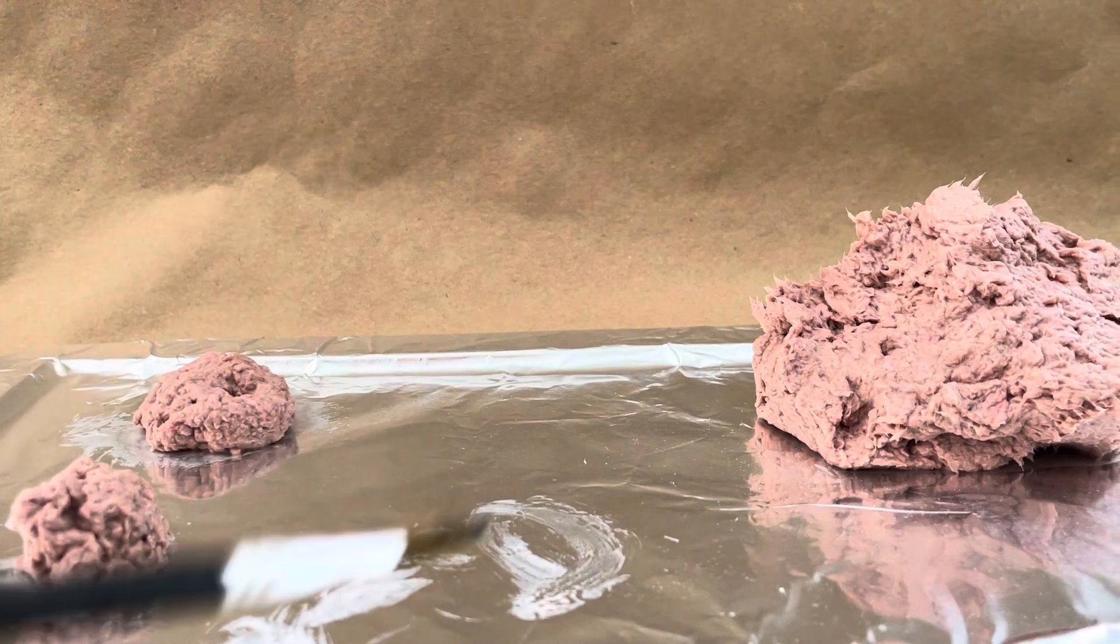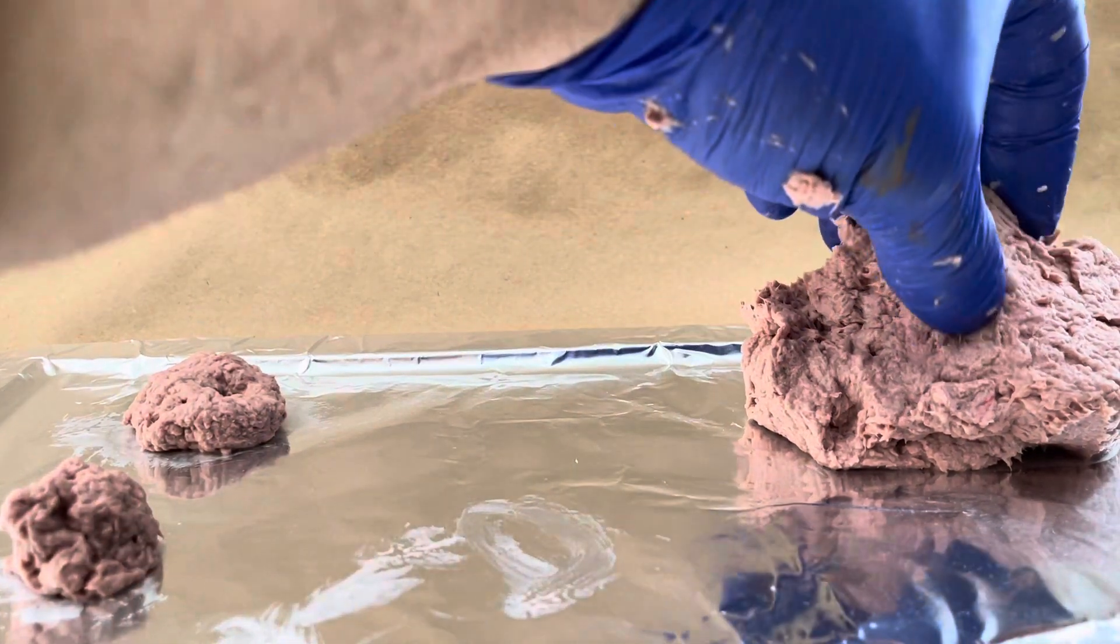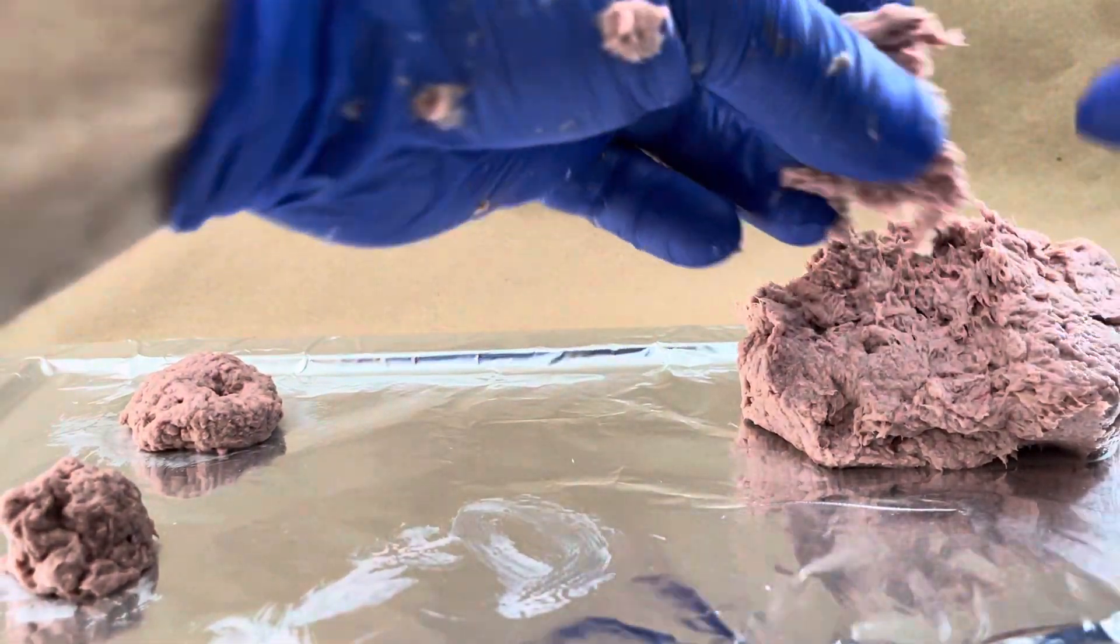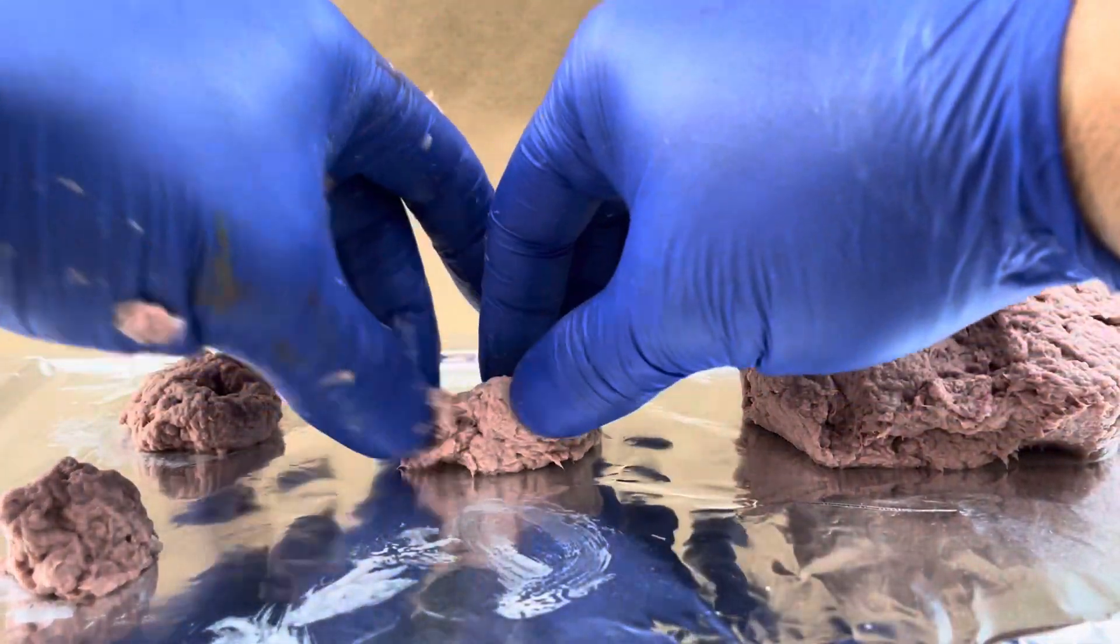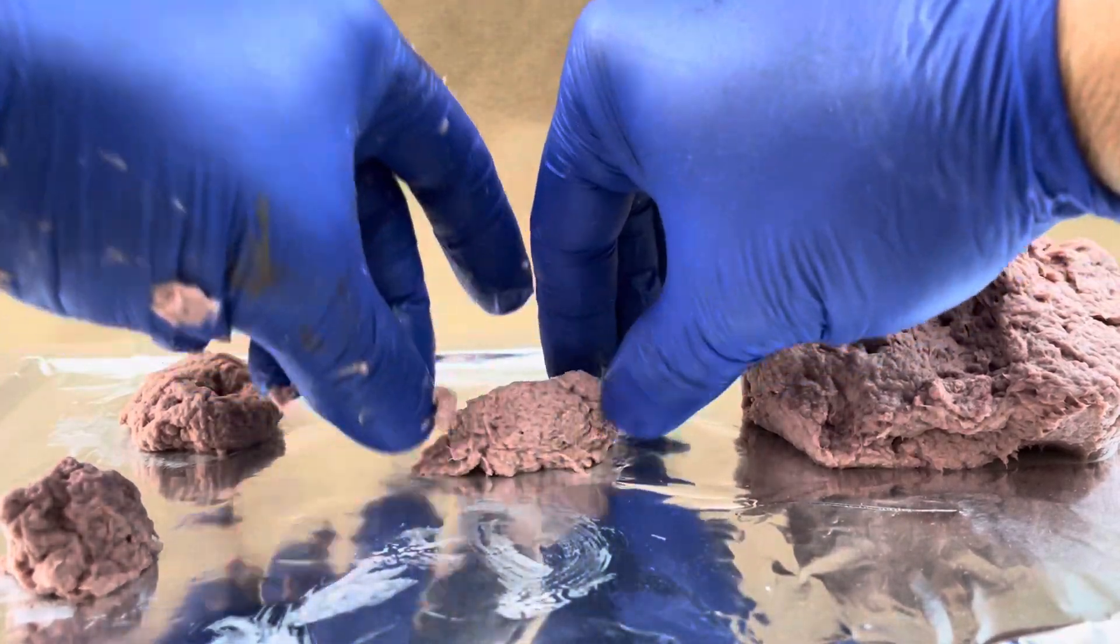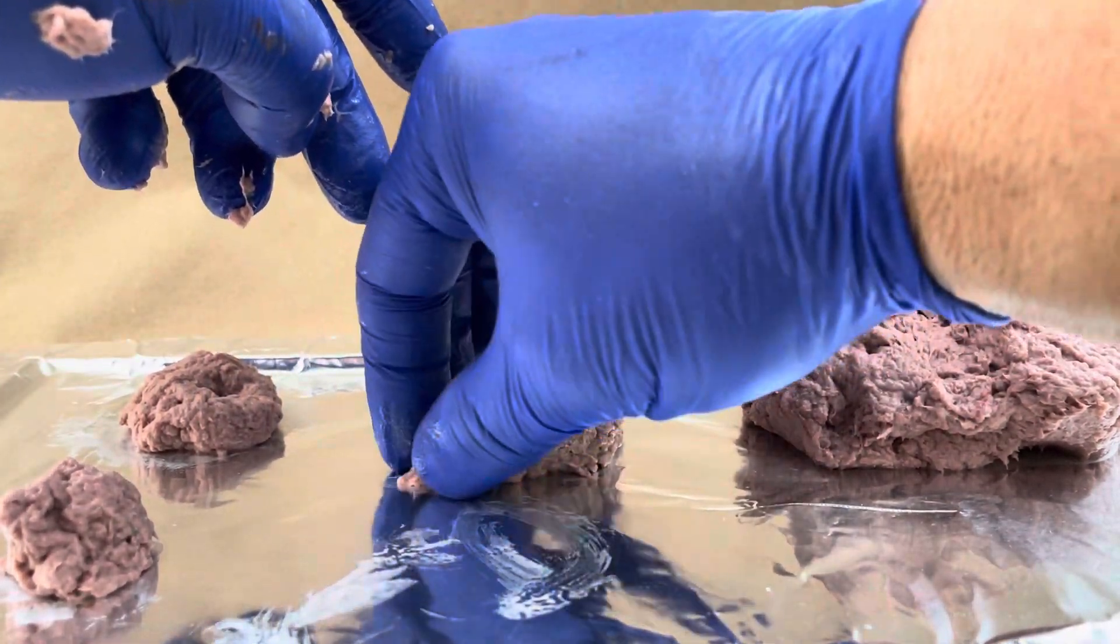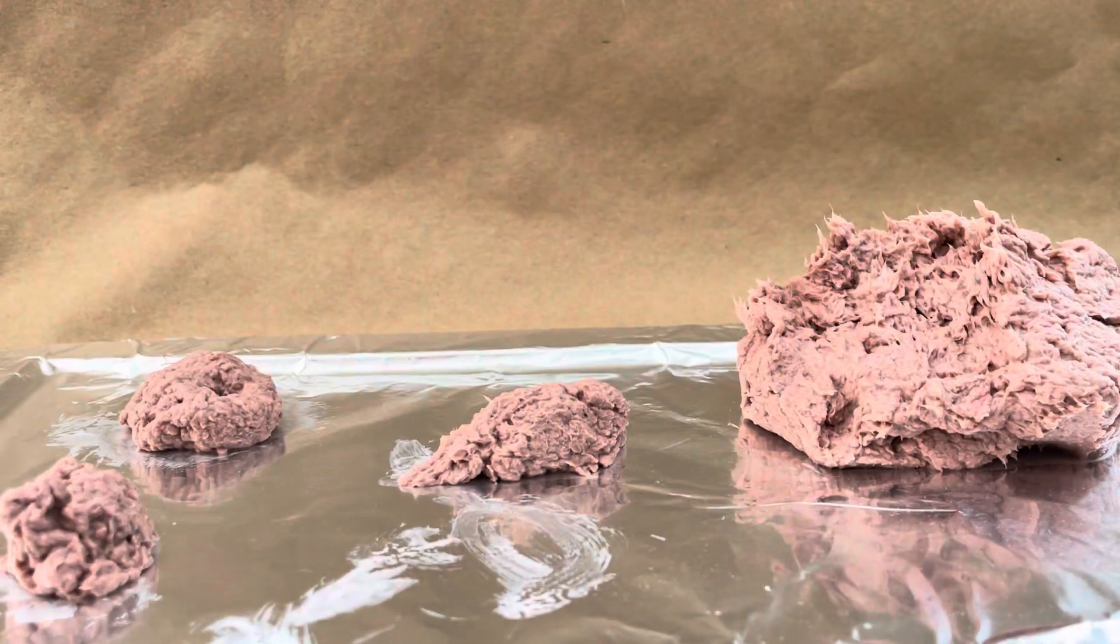All right, so let's make another one here. I'm going to take another lump and make a fairly decent sized one. Maybe I want this rock to look a little bit more oblong, like an oblong rock or something like that. Maybe it's got a little ridge to it.